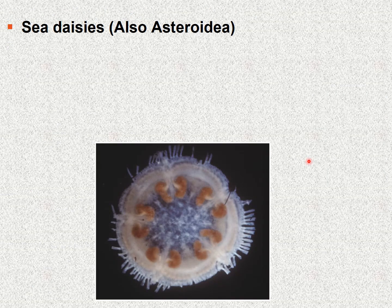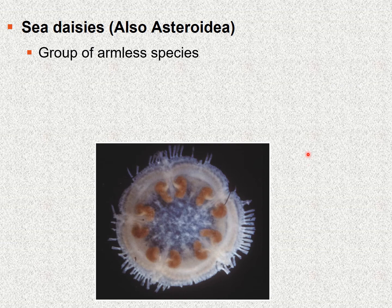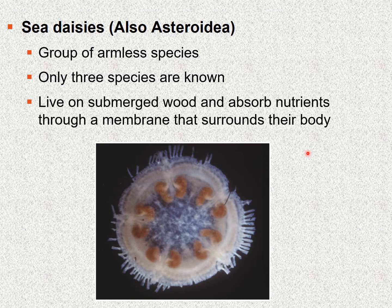The sea daisies are quite different from sea stars, but are also Asteroidea. They lack arms, so they don't have penta-radial symmetry, and their adult form appears more radial — however, remember they are bilaterians. There are only three known species of this group. They live on wood submerged in the ocean and absorb nutrients through a membrane that surrounds their entire body.